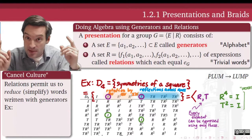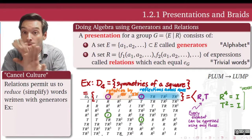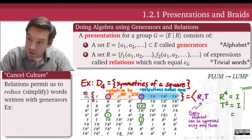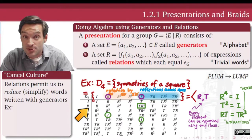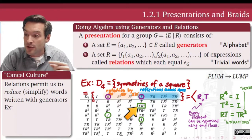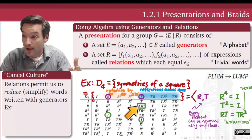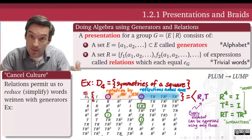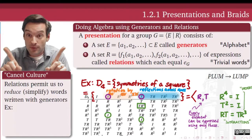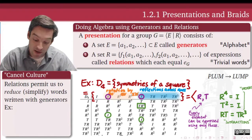But order relations alone are not enough, because these generators also interact with one another. T multiplied by R and R multiplied by T are not the same element in the symmetry group of the square. So we need more relations to describe that interaction. For example, if I do rotation first followed by reflection — R followed by T — it turns out that's the same as doing reflection first, T, and then the opposite rotation, R inverse or R to the third power. So RT and TR cubed are the same element. This is what I call an interaction relation: it tells me how R and T commute or don't commute. In this case, they don't — RT is not the same as TR; RT equals TR cubed.